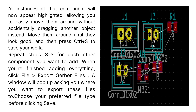Repeat the process for each other component you want to add. When you're finished adding everything, click File > Export Gerber Files. A window will pop up asking you where you want to export these files. Choose your preferred file type before clicking Save.